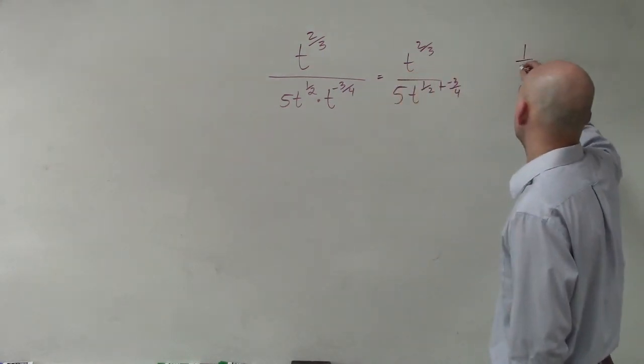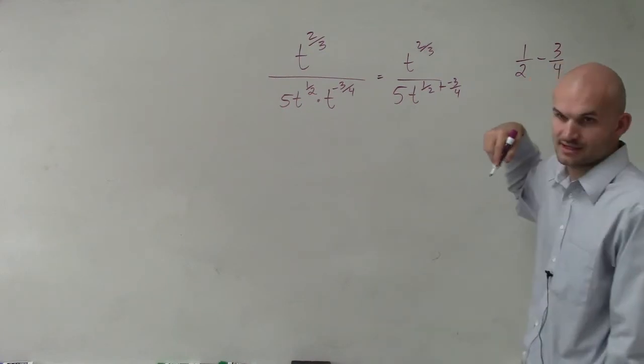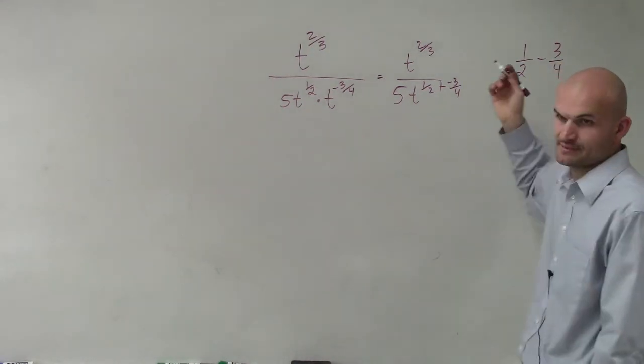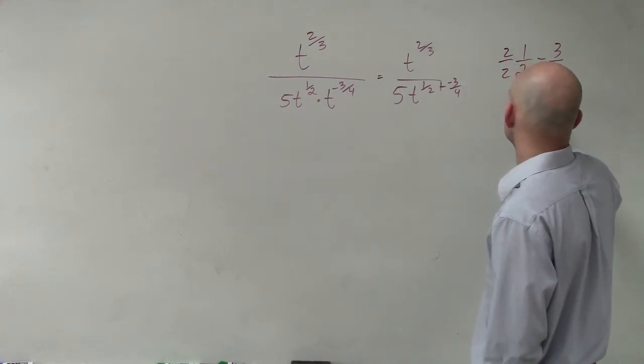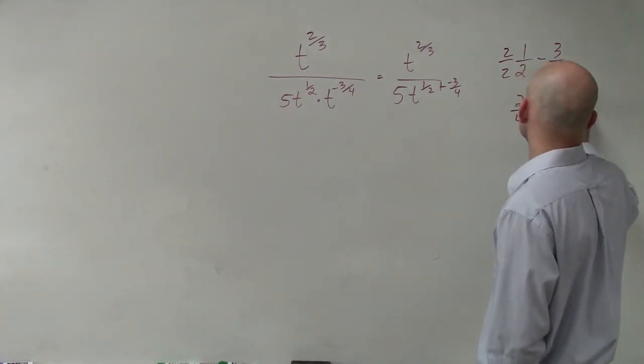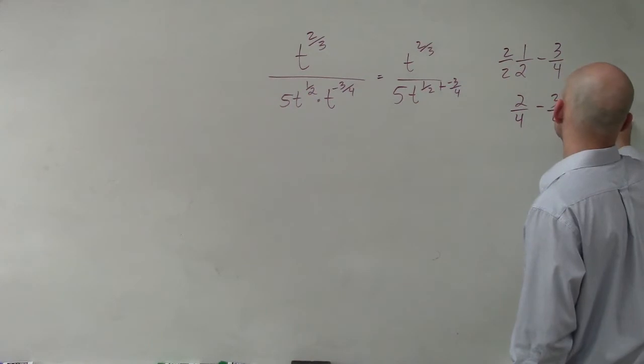So now you have to do 1 half minus 3 over 4, right? Plus and minus, plus and negative, same thing as minusing. Now I get them to be the same denominator. So I get 2 over 4 minus 3 over 4, which equals a negative 1 fourth.